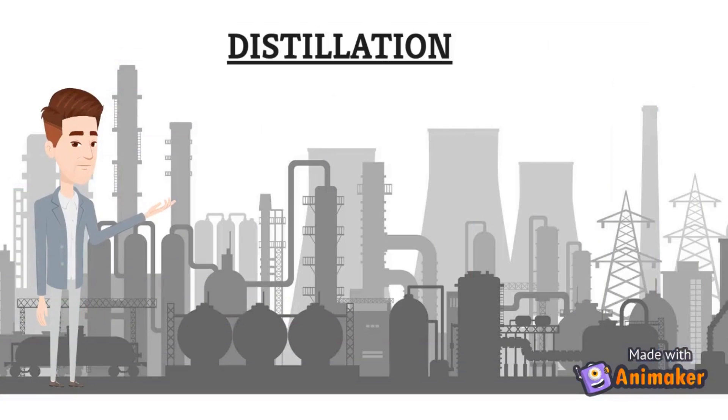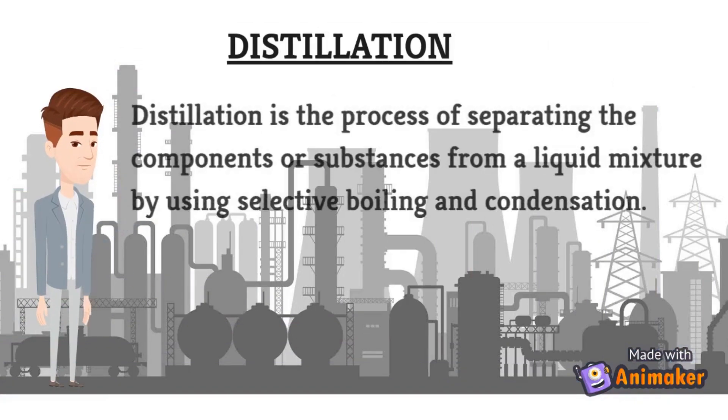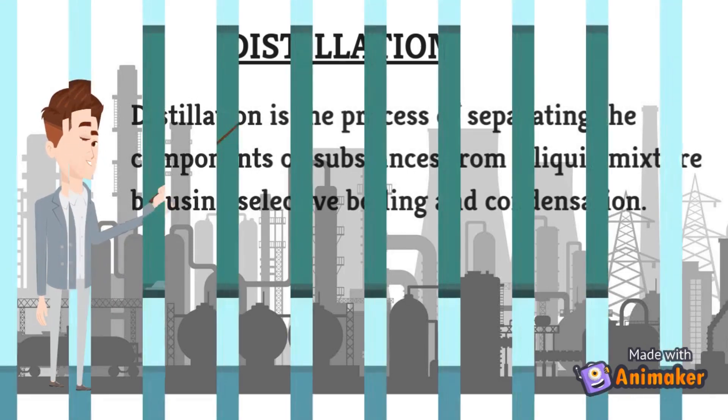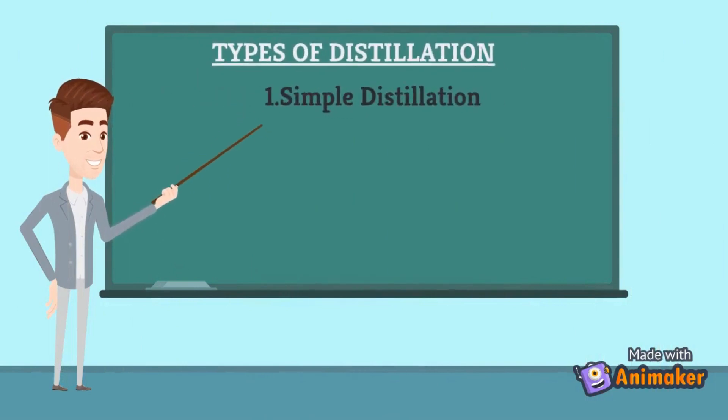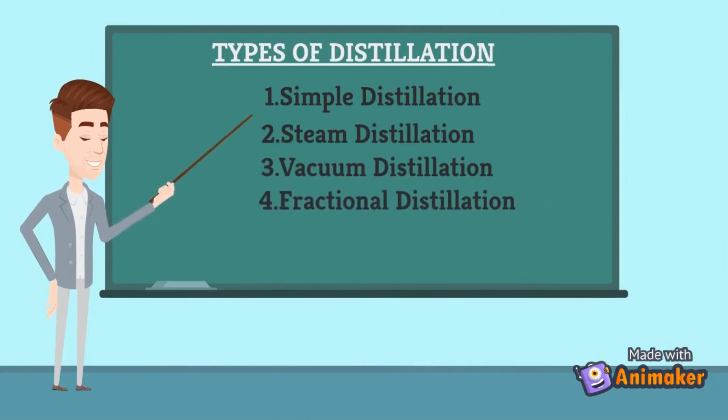Distillation involves conversion of liquid into vapor that is subsequently condensed into liquid form through selective boiling and condensation. Types of distillation include: simple distillation, steam distillation, vacuum distillation, fractional distillation, azeotropic distillation and extractive distillation.